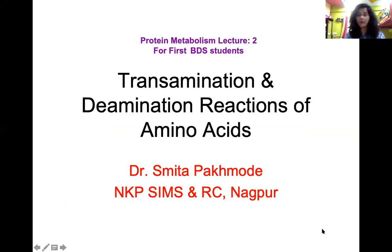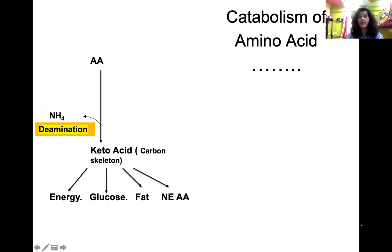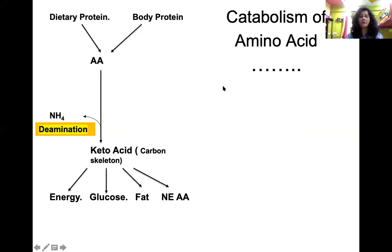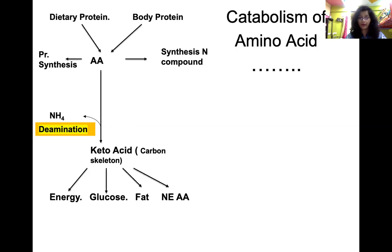Today we are going to discuss two important metabolic processes regarding metabolism of protein: transamination and deamination reactions of amino acids. Amino acids found in the blood come mostly from digestion and absorption of dietary protein and degradation of body protein. Most of this amino acid is utilized for synthesis of new structural protein and non-protein nitrogenous compounds — this falls under the anabolism part. Now let's go to the catabolism part.